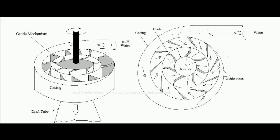This is the schematic diagram of a Francis Turbine. There is a duct connected to a spiral casing. The inner side of the spiral casing consists of a guide mechanism, which consists of vanes mounted at a particular angle.